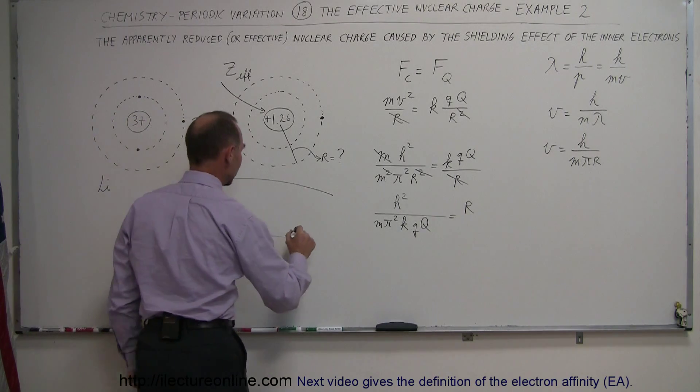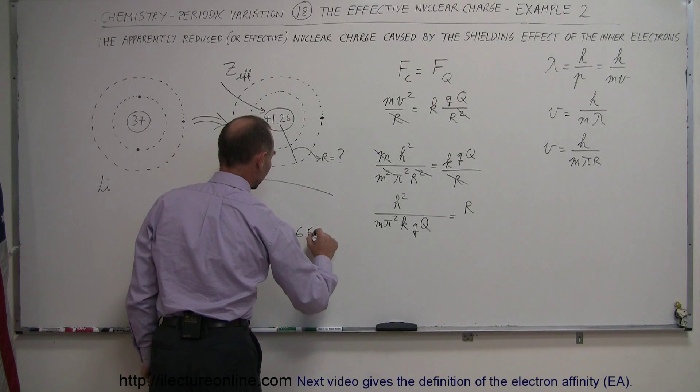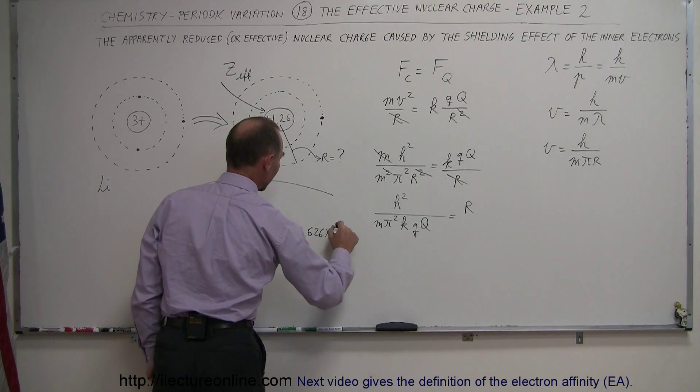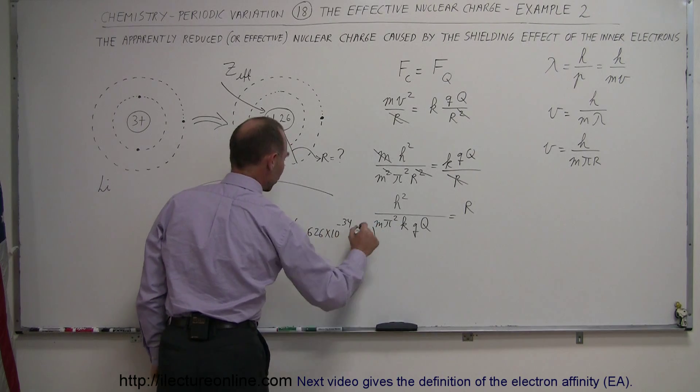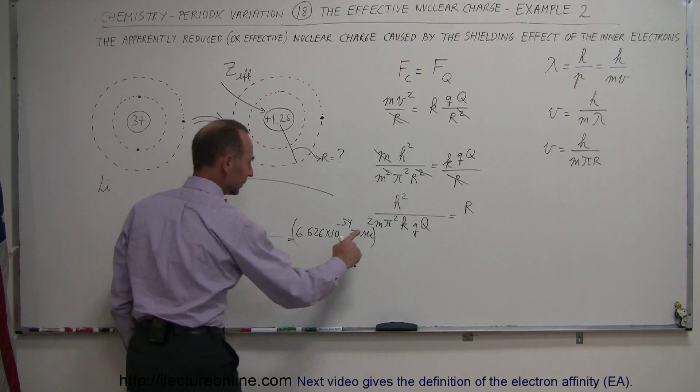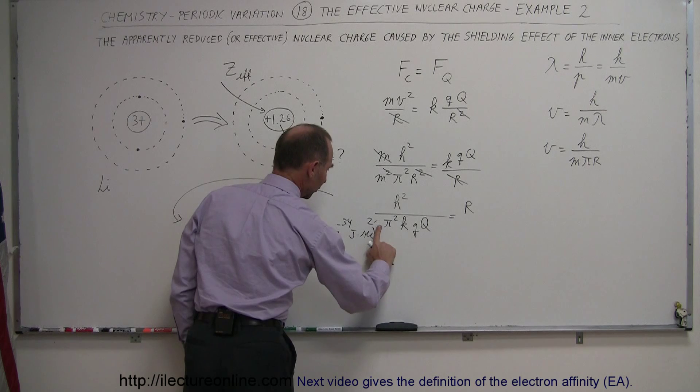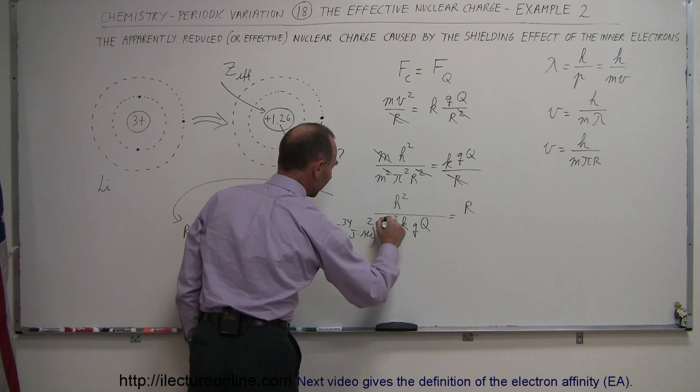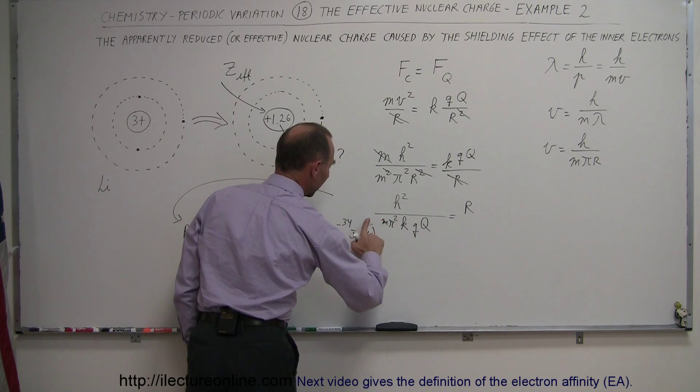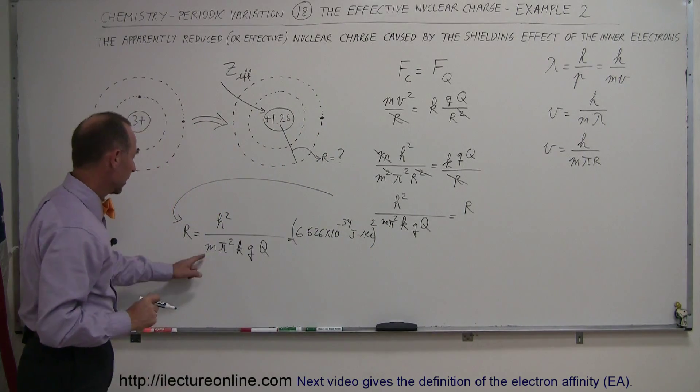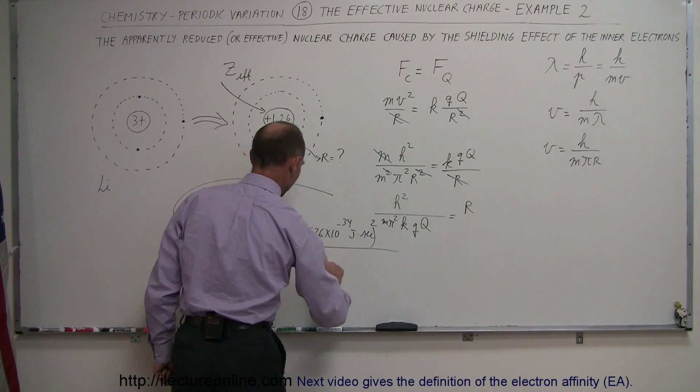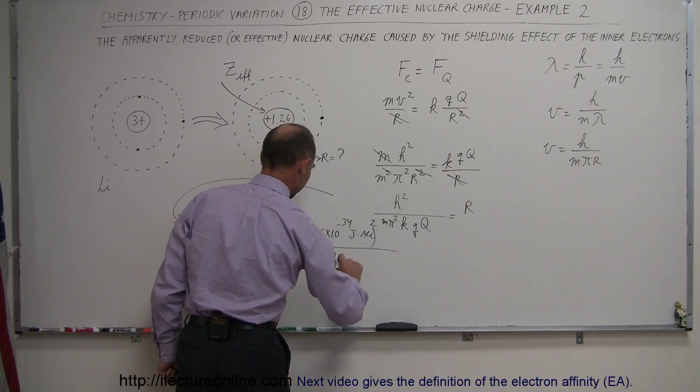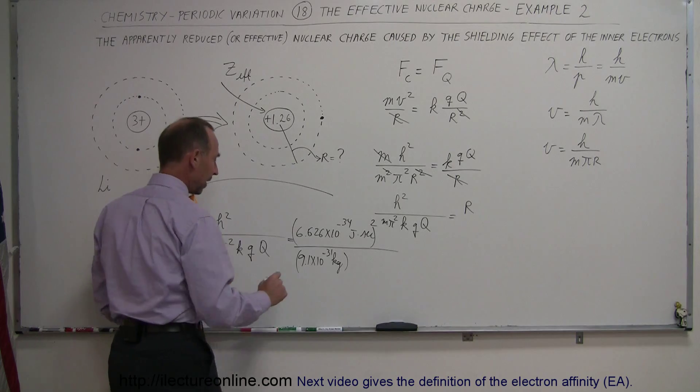Okay, let's plug in some numbers. h is 6.626 times 10 to the minus 34 joules times seconds, and we have to square that. This is m pi squared, this is the exponent 2, divided by the mass of the electron, 9.1 times 10 to the minus 31 kilograms, times pi squared.